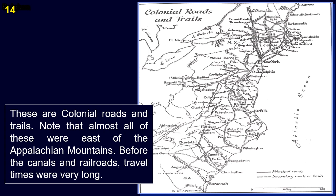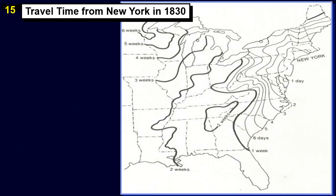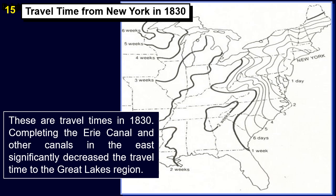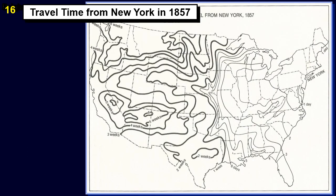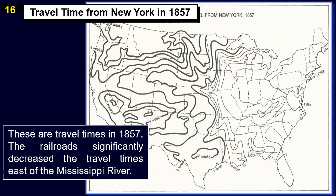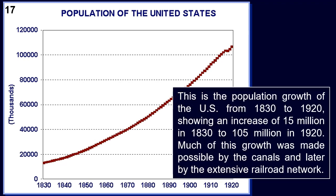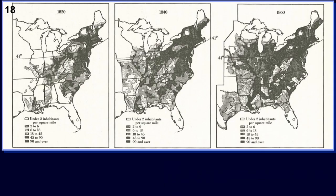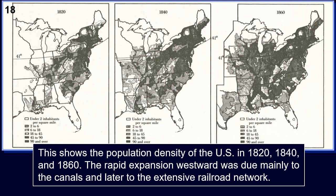Before the canals and railroads, travel times were very long. By 1830, completing the Erie Canal and other canals in the east significantly decreased the travel time to the Great Lakes region. By 1857, the railroad significantly decreased the travel times east of the Mississippi River. Much of the population growth from 1830 to 1920 was made possible by the canals and later by the extensive railroad network. The rapid expansion westward was due mainly to the canals and later to the railroad network.